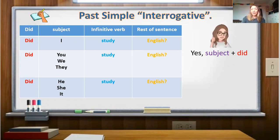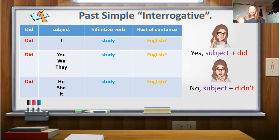What about the other answer? On the opposite, we have got the negative answer. So, in this case, would be, no, the subject, and didn't. So would be, did you study English? No, we didn't. Did he study English? No, he didn't.